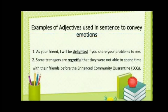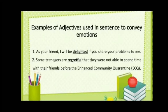Here are examples of adjectives used in sentences to convey emotion. Number one: 'As your friend, I will be delighted if you share your problems with me.' The word delighted describes the positive feeling of the person about being able to listen to a friend's problem. Number two: 'Some teenagers are regretful that they were not able to spend time with their friends before the enhanced community quarantine or ECQ.' The word regretful emphasizes the teenager's negative emotion on not being able to be with their friends before the ECQ.